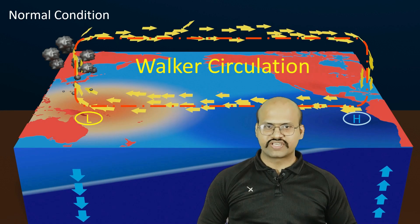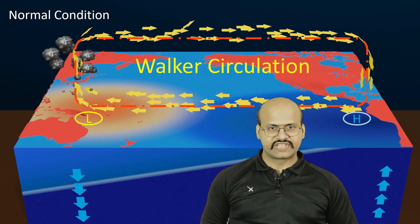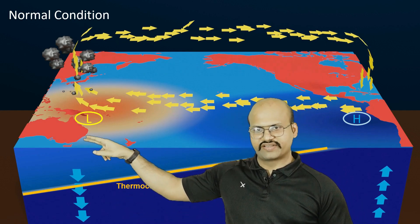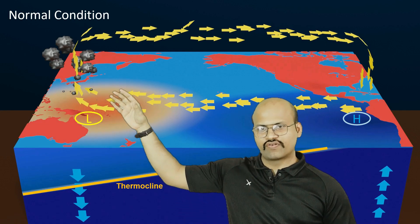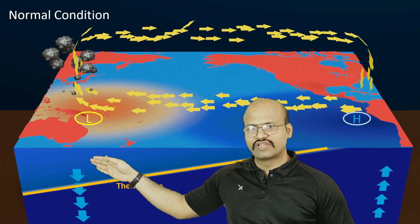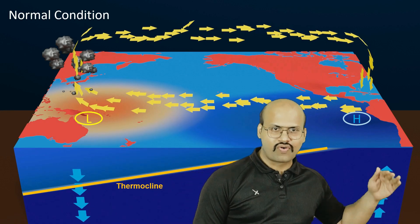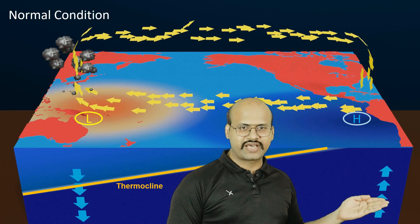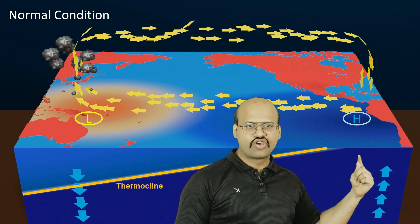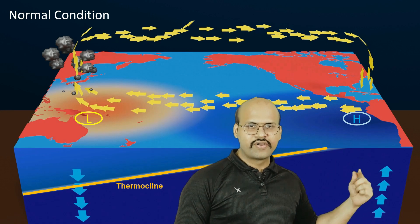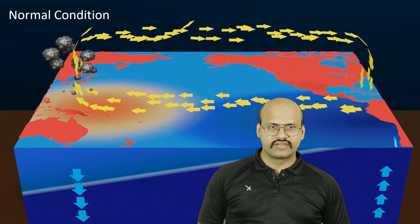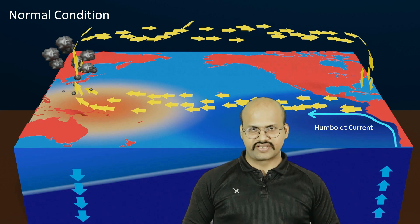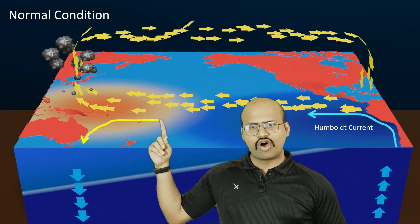This is the normal Walker Circulation seen in normal years. The thermocline is more inclined towards the Australian side, where warm water accumulation is greater and the thermocline moves downwards. On the South American side, cooler waters from the ocean depths reach the surface, so the thermocline almost reaches the surface. Under normal conditions there is also a cold ocean current on the South American side called the Humboldt Current, and a warm ocean current on the Australian side.